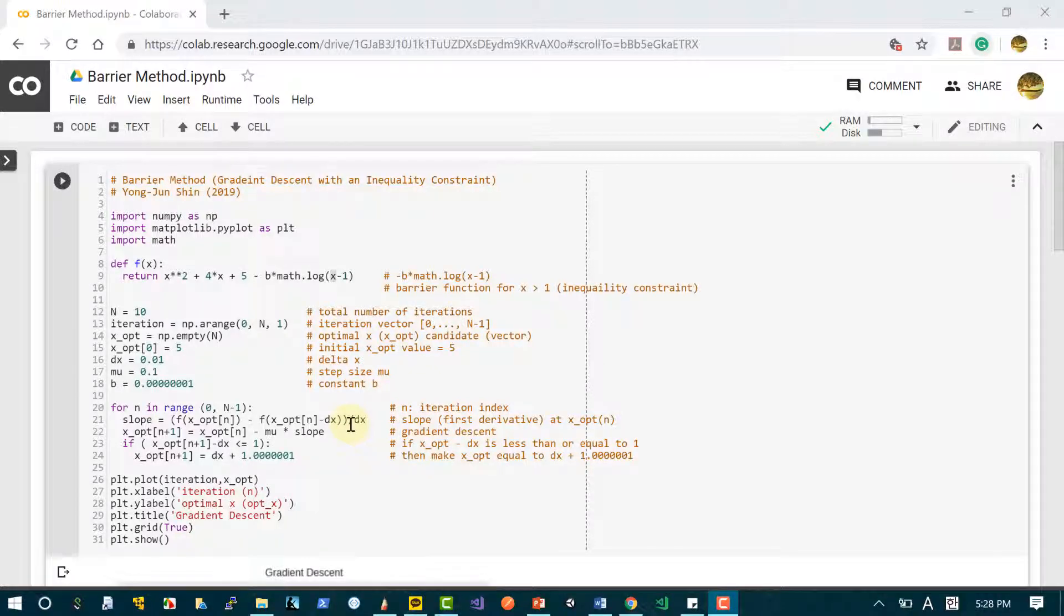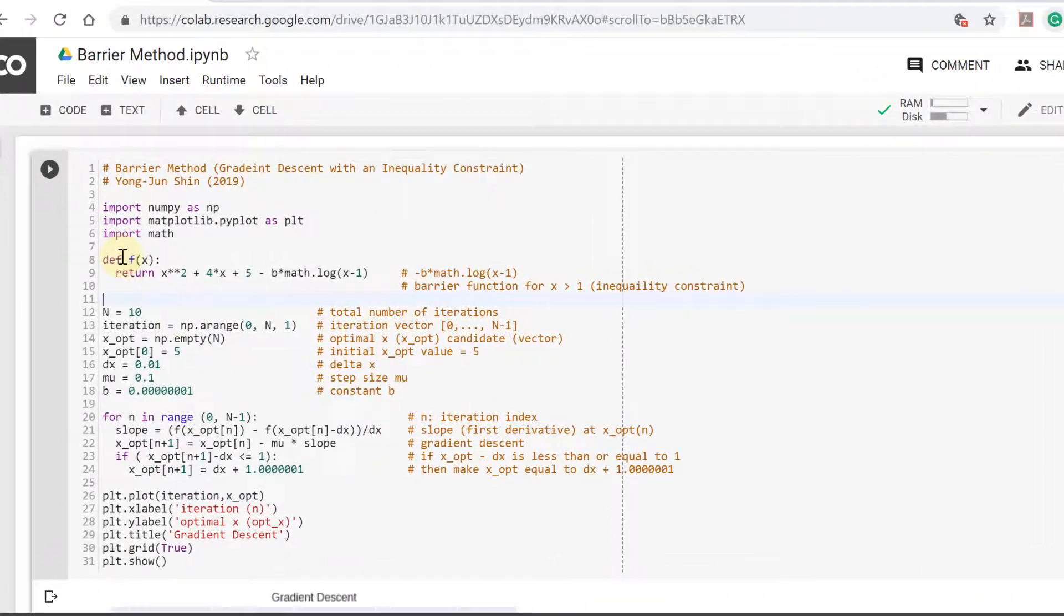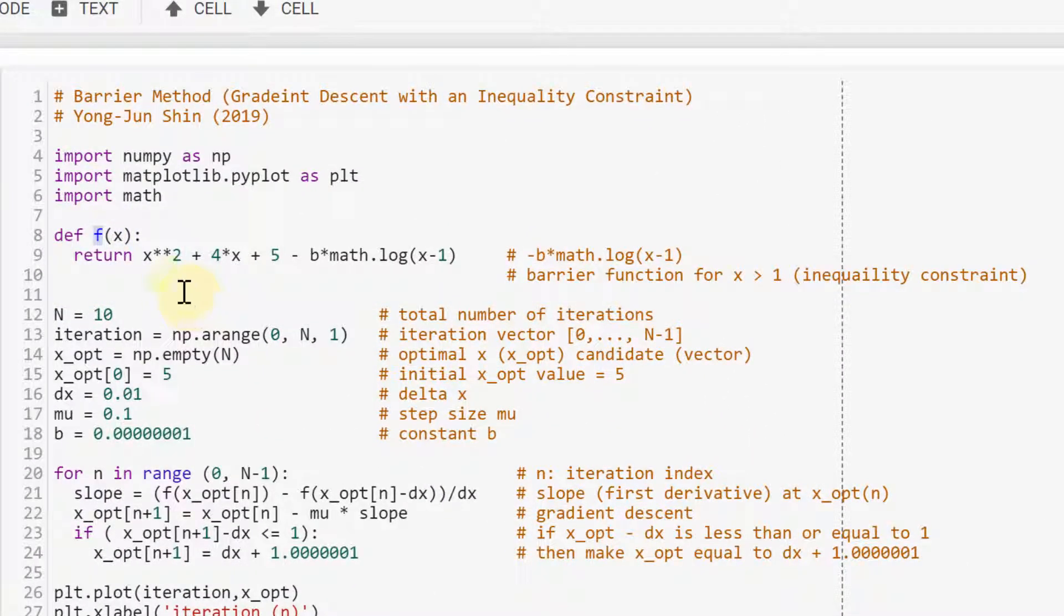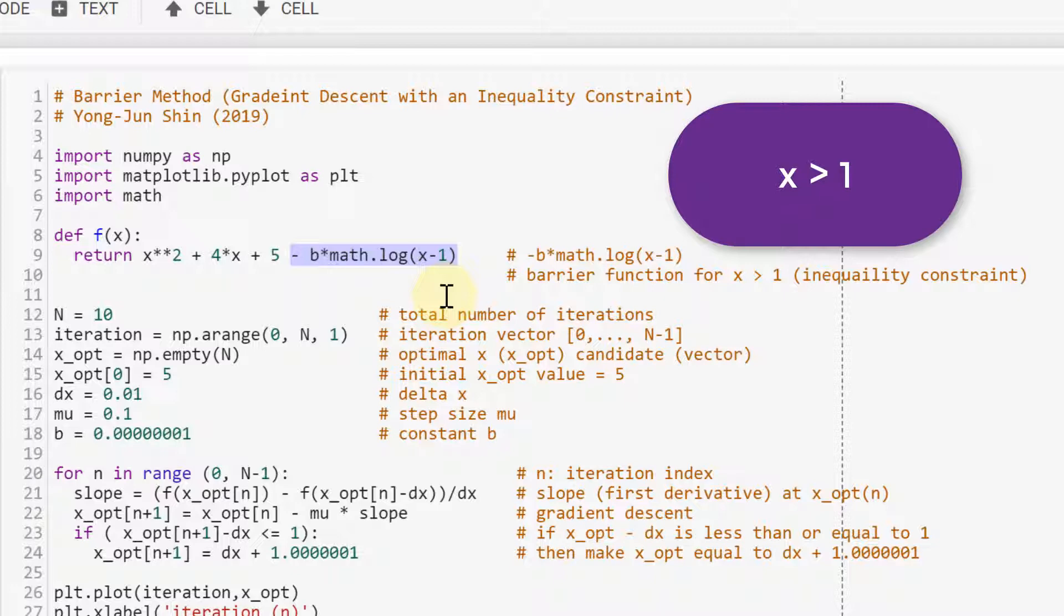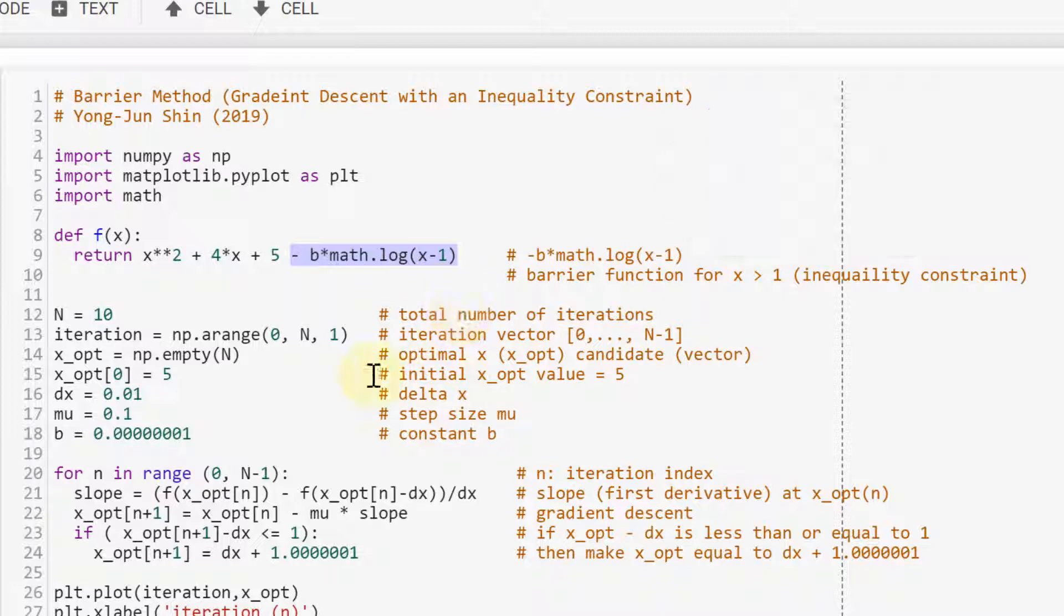Now I want to demonstrate gradient descent with an inequality constraint using the barrier method. So we have this function f. That function has this barrier function for an inequality constraint which is x is greater than 1, and we have